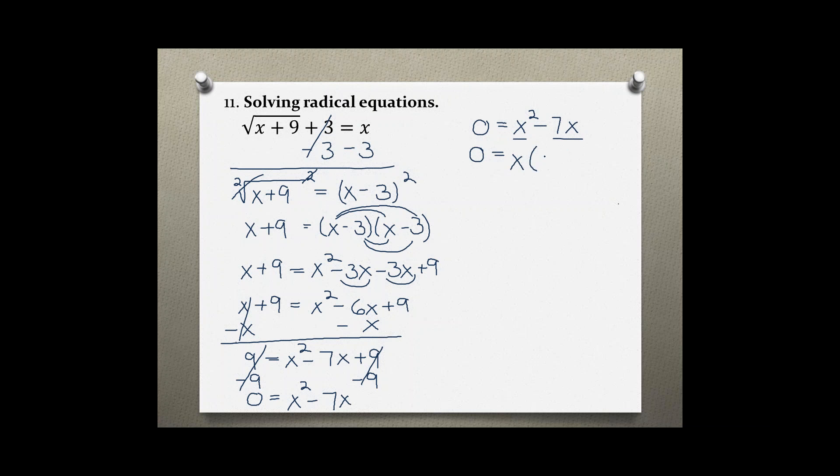They both share an x and I'm left with x minus 7. I'm going to set each part equal to 0, so I get 0 equals x and also 0 equals x minus 7. This side is already done, but here I have to isolate the x, so I'm going to add 7 to both sides. So 7 equals x, or x equals 7.